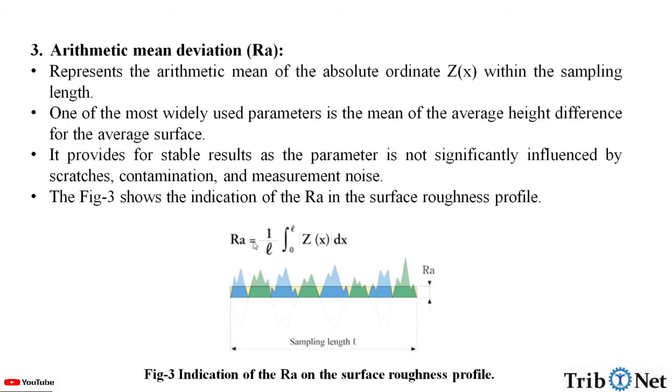And Ra formula is given by 1 by L, limit of 0 to L, Z of x dx. Here we can see the indication of Ra in the surface roughness profile.